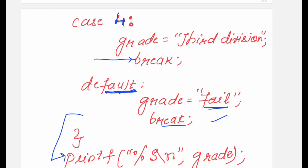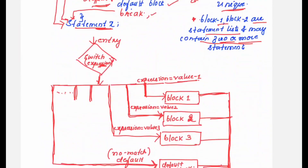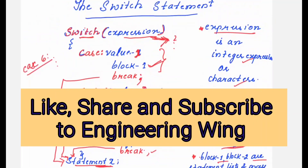In every case, once the statements execute, control comes out and prints the grade. This is how the switch statement in C programming works. Hope you find this session useful — if you do, please like, share, and subscribe to my channel. Thank you, bye bye.